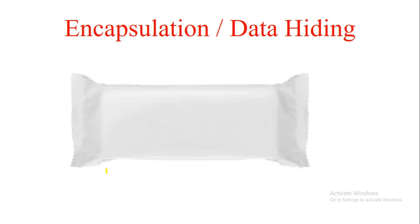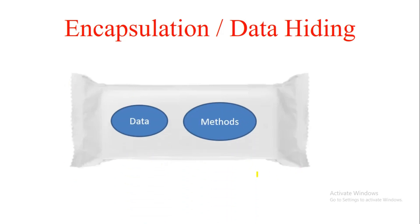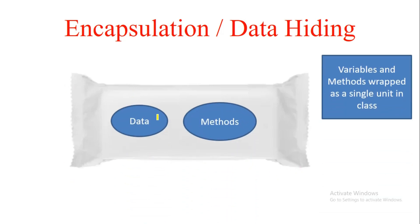Let's first understand encapsulation and data hiding theoretically, and then in the next video I'll show you how to implement encapsulation in Java. Can you see this chocolate wrapper? This is a way to understand how we encapsulate things. In Java, variables and methods — the data and the logic that runs upon this data — are wrapped in a single unit called a class.